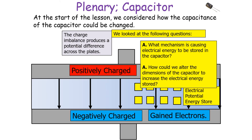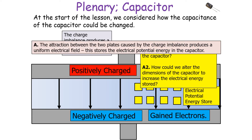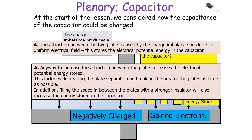We've previously considered how the capacitance of a capacitor could be altered, but to understand this we need to think about the following ideas: what mechanism is causing the electrical energy to be stored in the capacitor, and how could we alter the dimensions of the capacitor to increase the electrical energy stored? The attraction between the two plates caused by the charge imbalance produces a uniform electrical field, and this stores the electrical potential energy in the capacitor. Any way to increase the attraction between the plates increases the electrical potential energy stored. This could include decreasing the plate separation, making the area of the plates as large as possible, and filling the space between the plates with a stronger insulator.